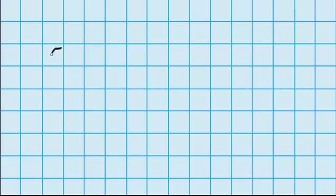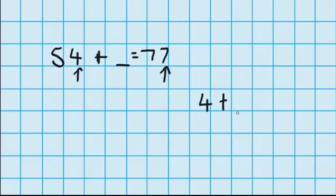Let's just try one last example. This time I've got 54 and I want to end up with 77, so I'm thinking 54 plus what will lead me to 77? Let's start with the ones again. You can see I've got 4 ones, and I'm thinking how much do I need to add to get to 7? So I can record that like this: 4 plus what equals 7? And I know the answer to that is 3 — 4 plus 3 equals 7.